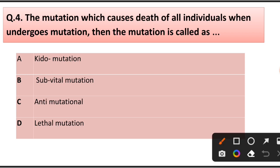Question number 4. The mutation which causes death of all individuals when they undergo mutation is called: kiddo mutation, sub-fetal mutation, anti-mutational, or lethal mutation. Answer is option D: Lethal mutation.